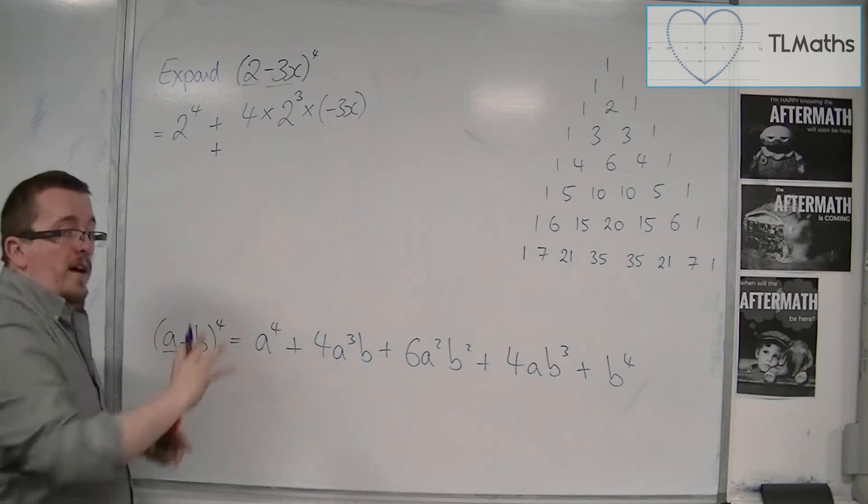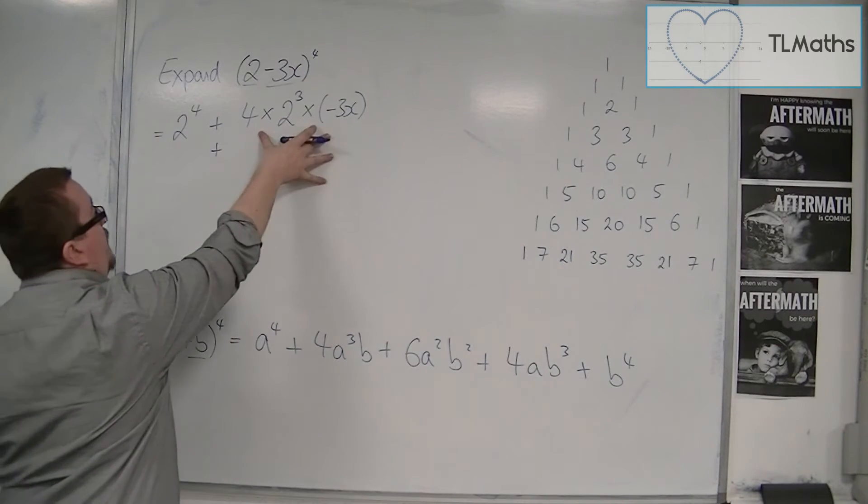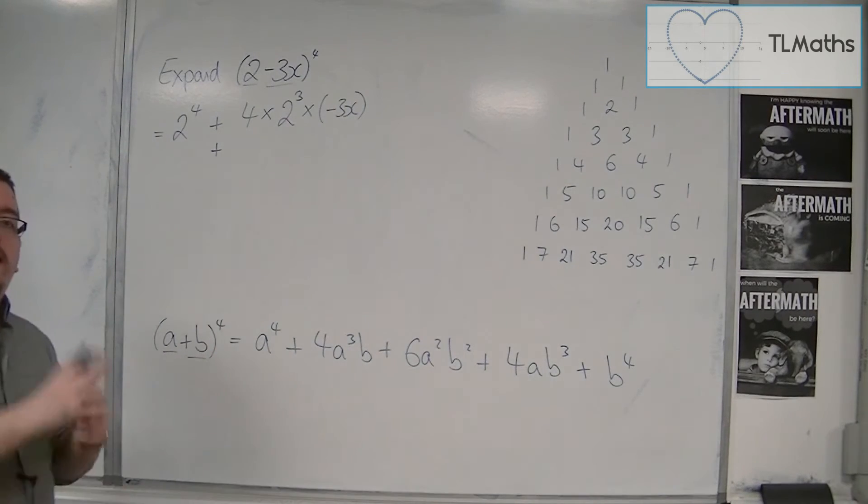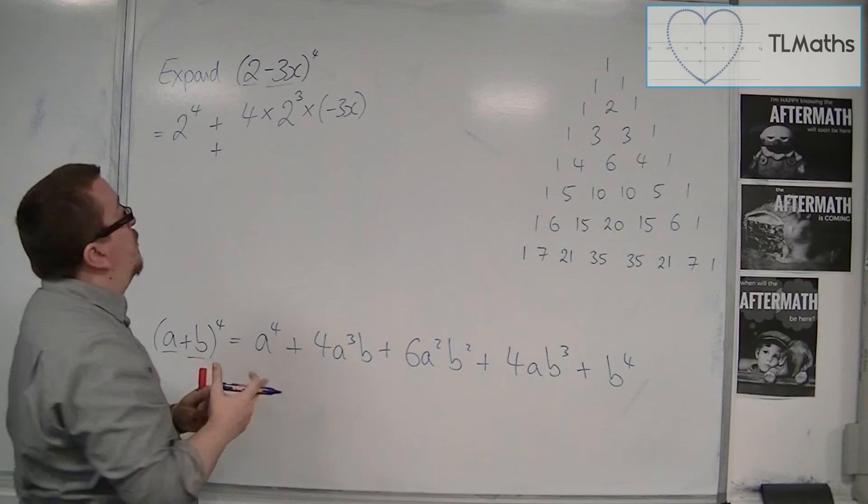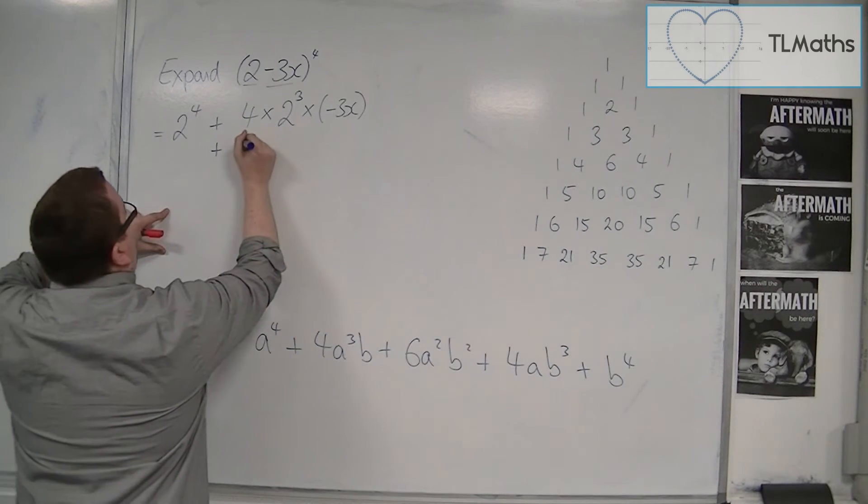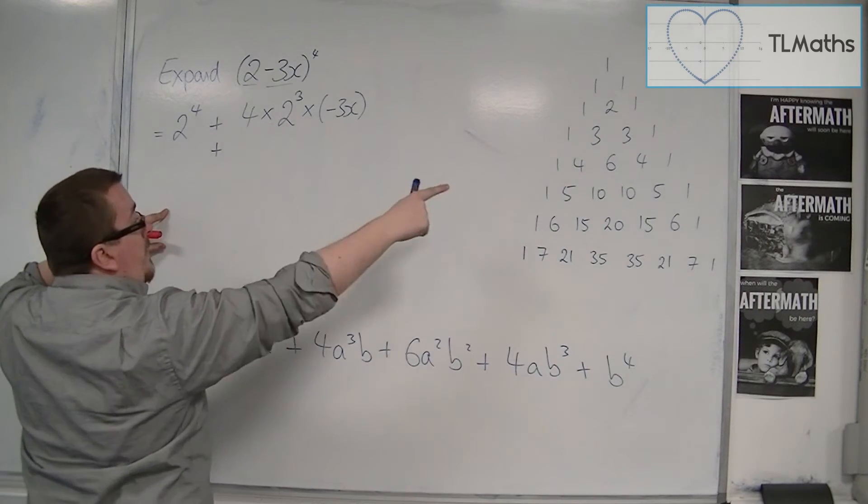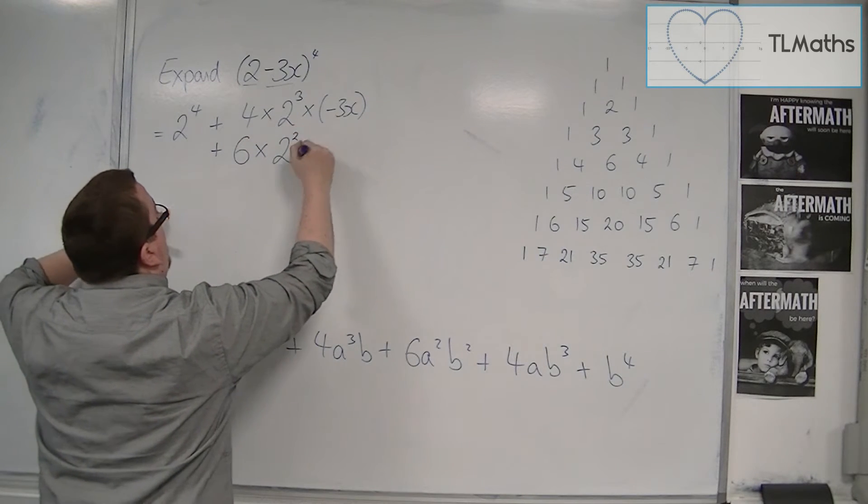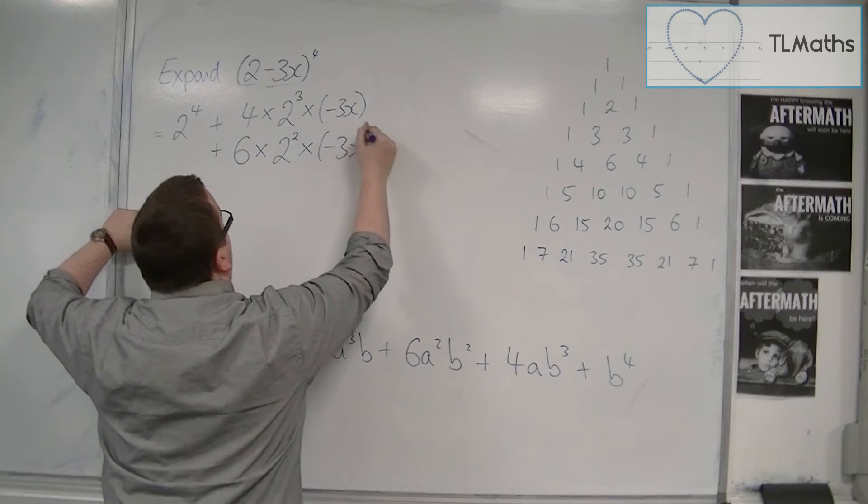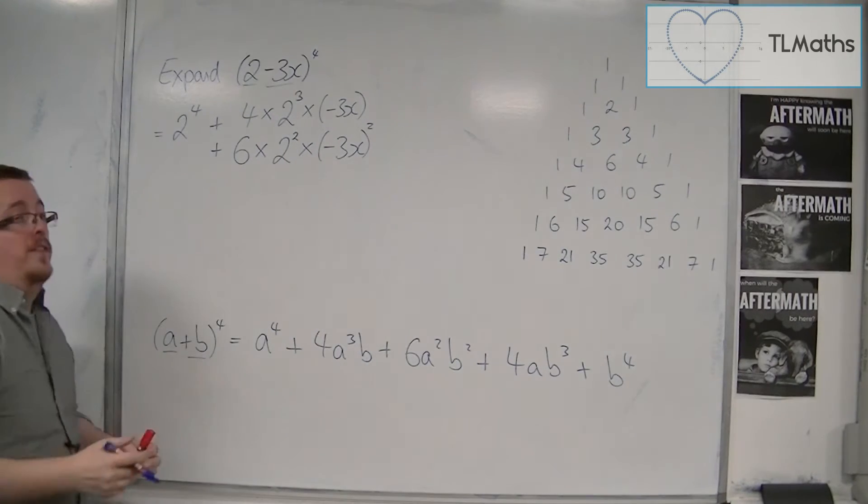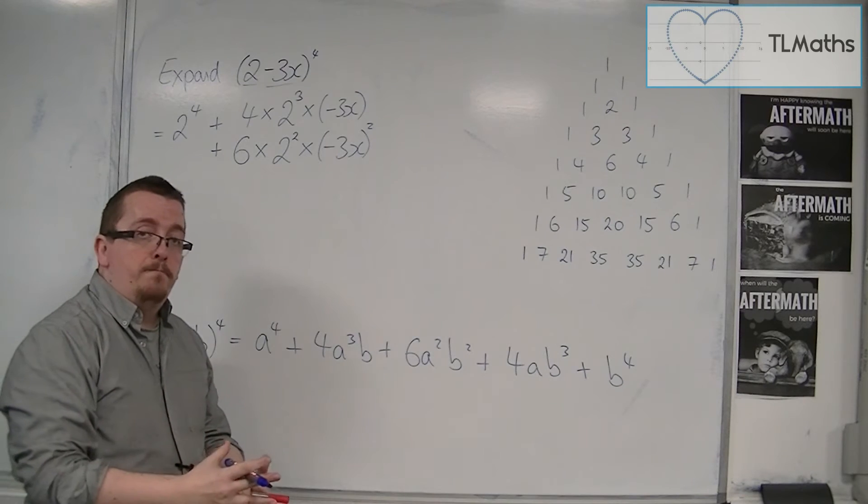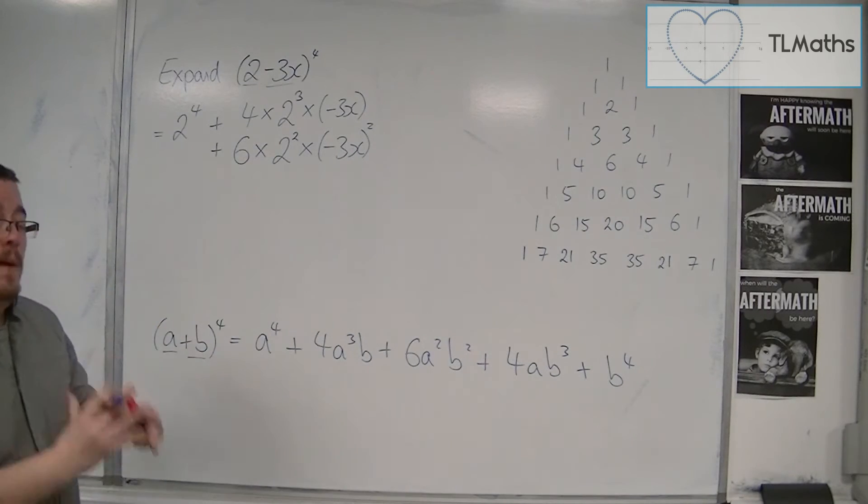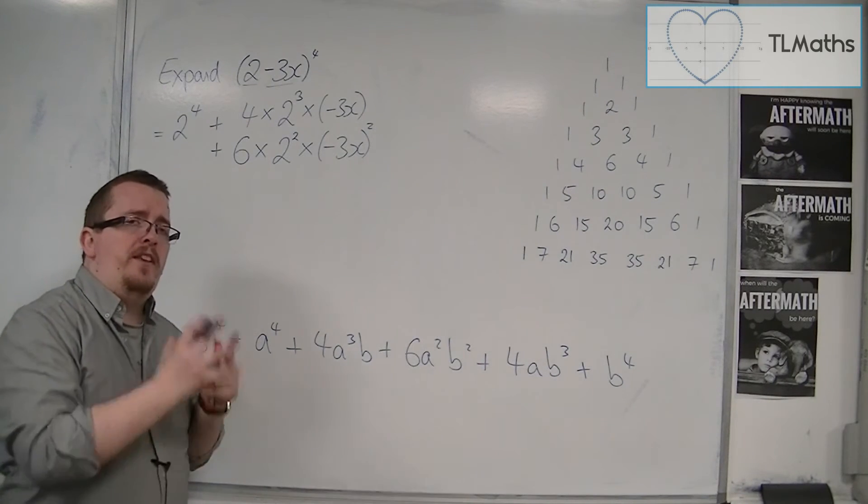Now, instead of writing it out in one long line, I tend to write this section in a column. You can spot the pattern much more easily. So we have, the next number is 6, so 6 times 2 reduces in power, and the minus 3x increases in power. It is imperative that you write this in a bracket. If you don't, something is bound to go wrong, especially with these minus signs.